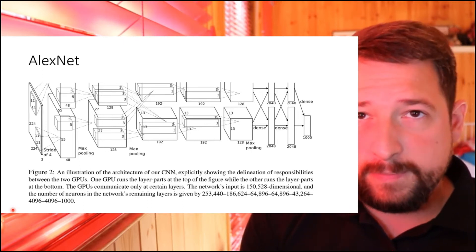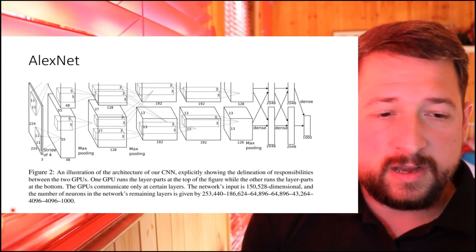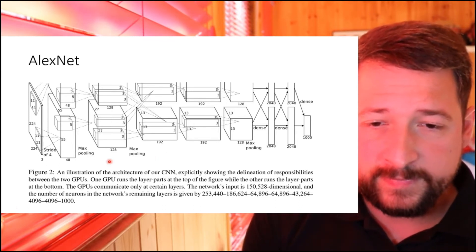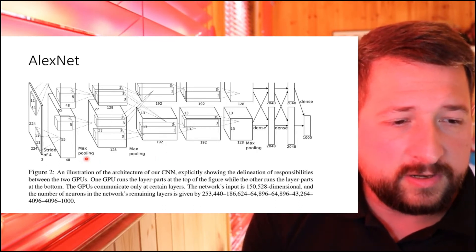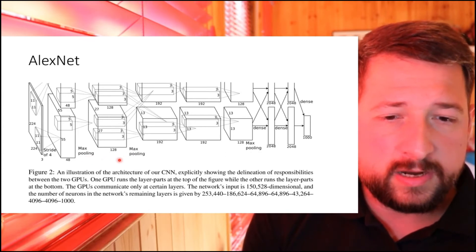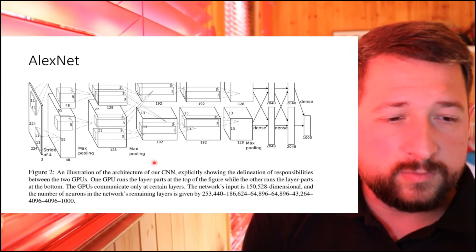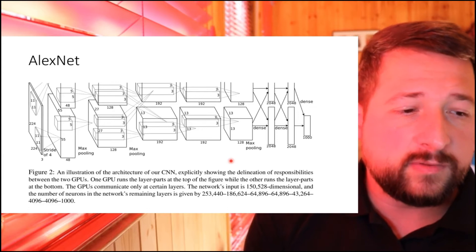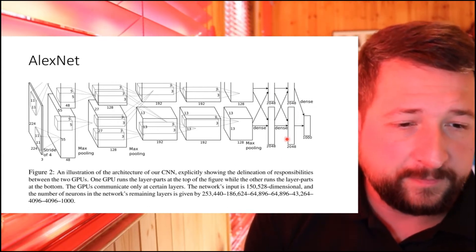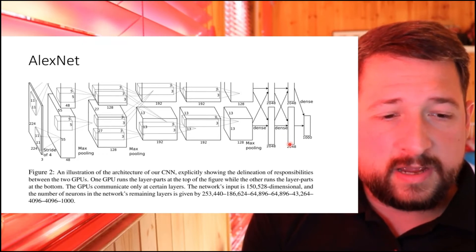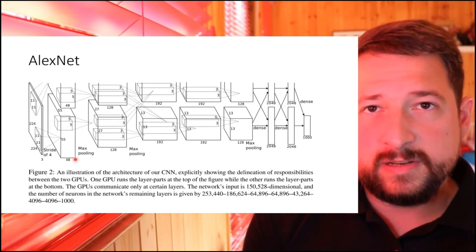The basic ConvNet AlexNet architecture is a convolutional layer followed by a pooling layer, followed by pooling, normalization, convolution, pooling, and a few more convolutional layers and pooling layers, then several fully connected layers. So this actually looks very similar to LeNet, doesn't it?